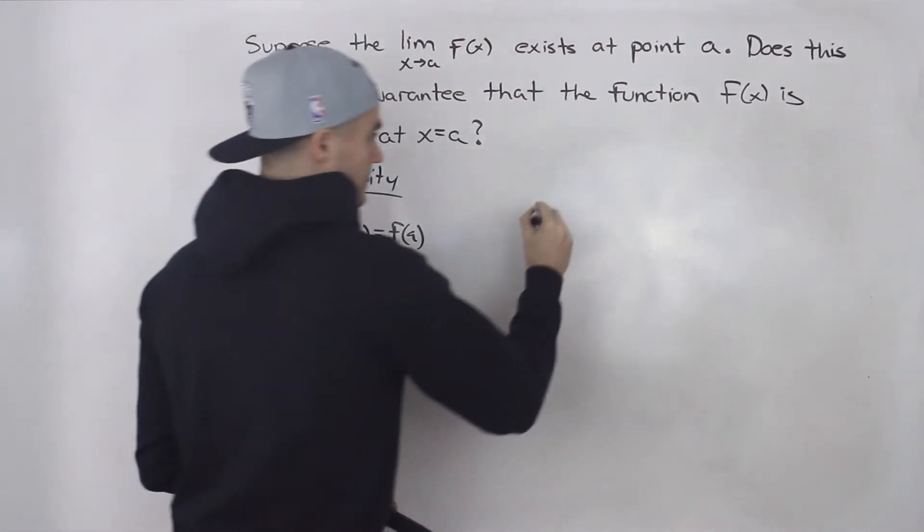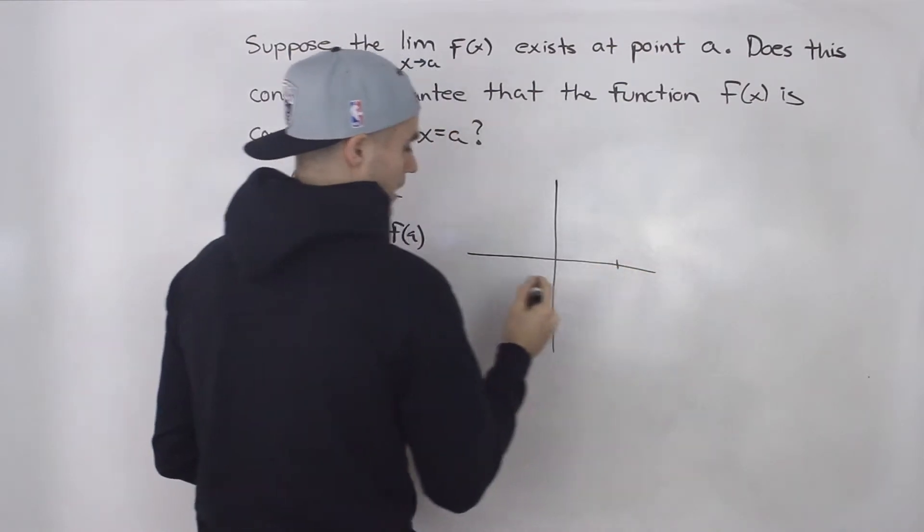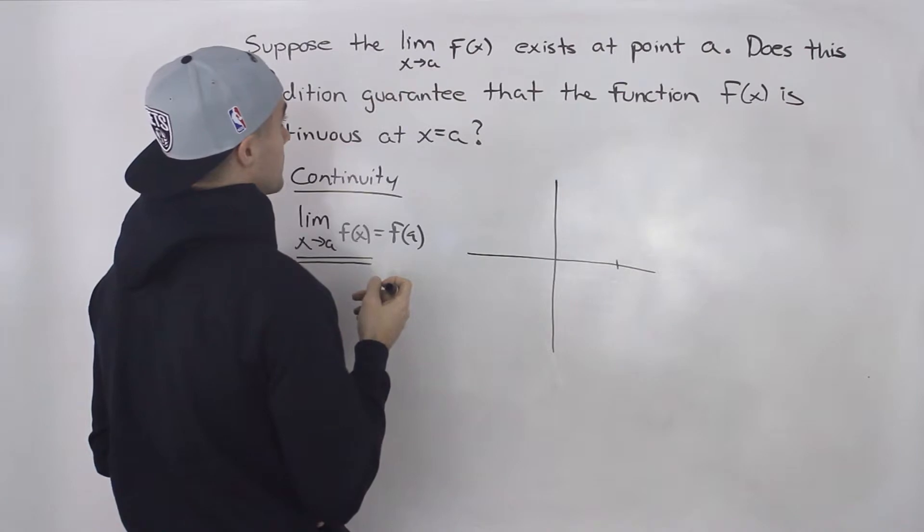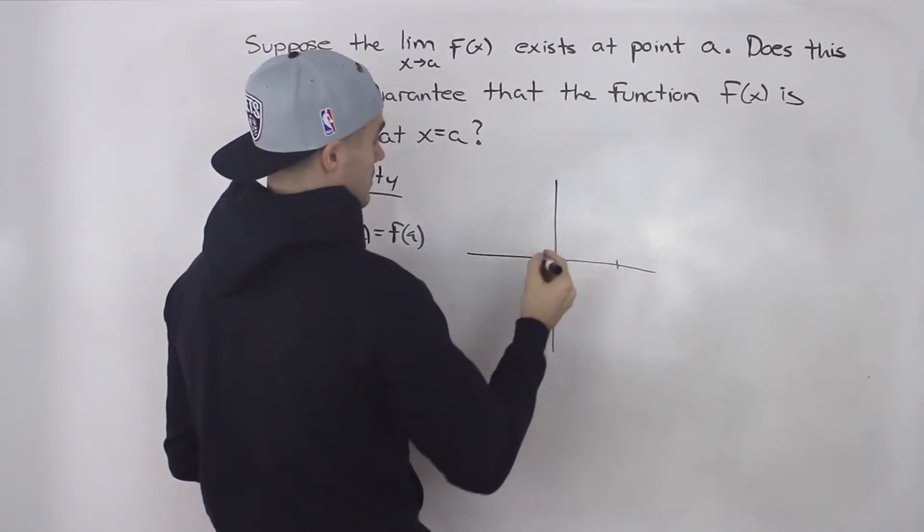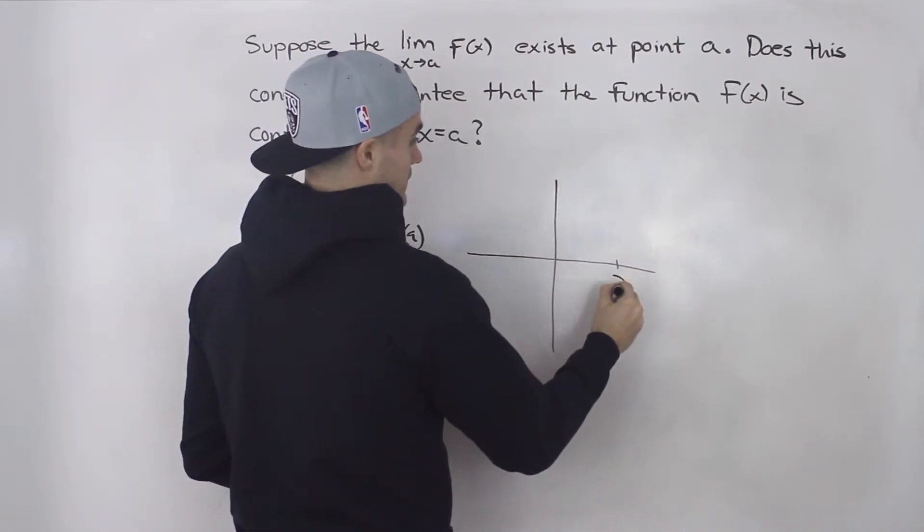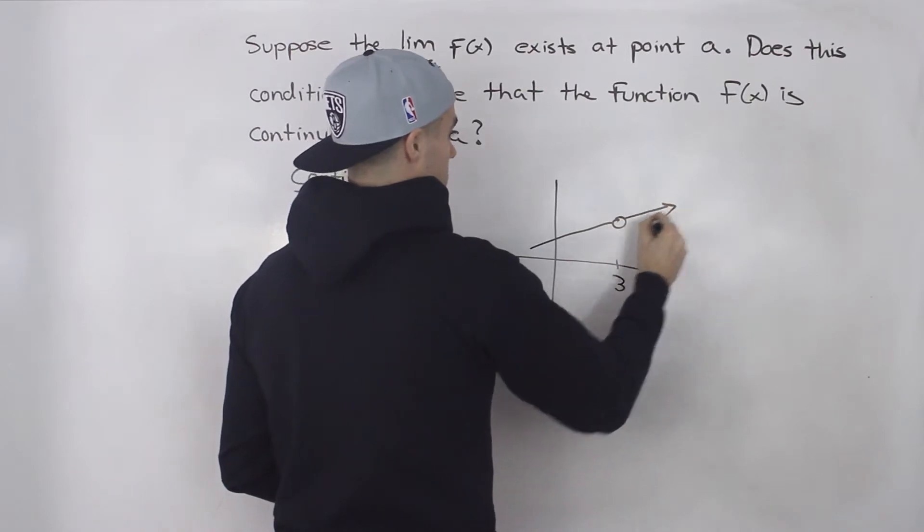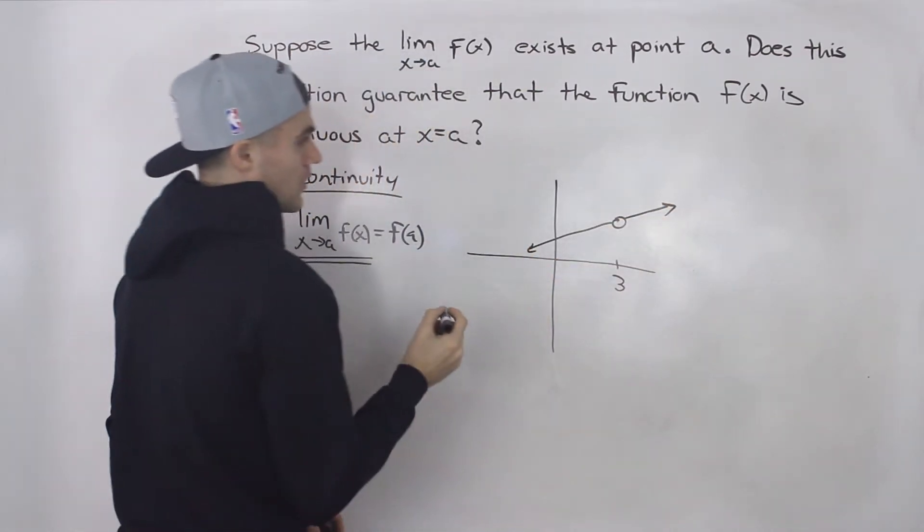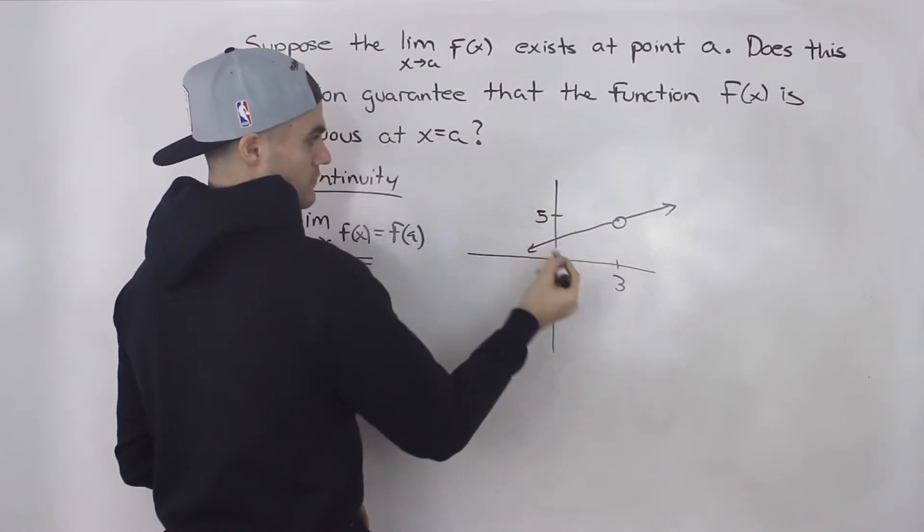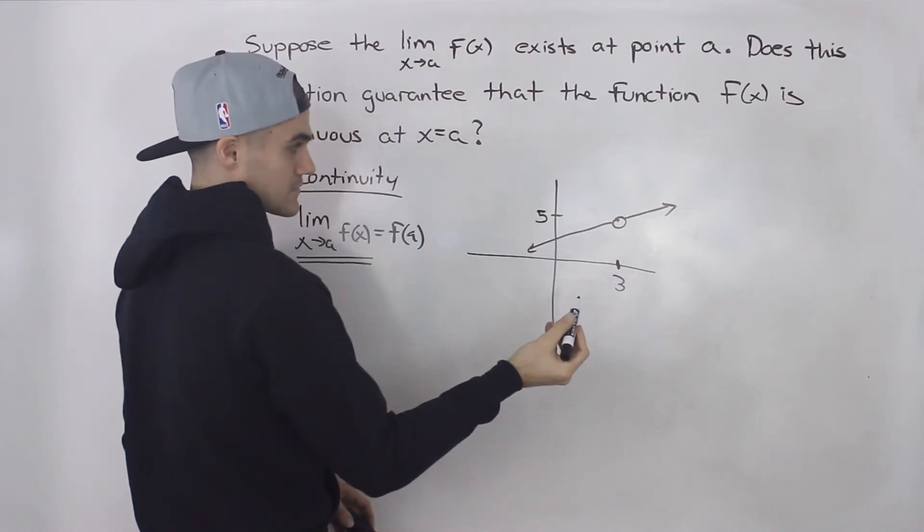So for example, let's say that we have a function that has a hole at an x value of three. So let's say it's a line like this. Well, is the function continuous? Let's say the y value is five. Is the function continuous at that x value of three?